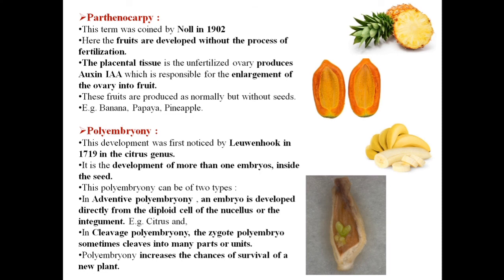So students, this was all about the topics covered in this chapter — reproduction in lower and higher plants. We studied asexual reproduction in lower plants and vegetative propagation. Then we came to sexual reproduction where we studied the male and female reproductive organs of angiosperms, how they are pollinated, the complete fertilization process, and the post-fertilization changes. Thank you.